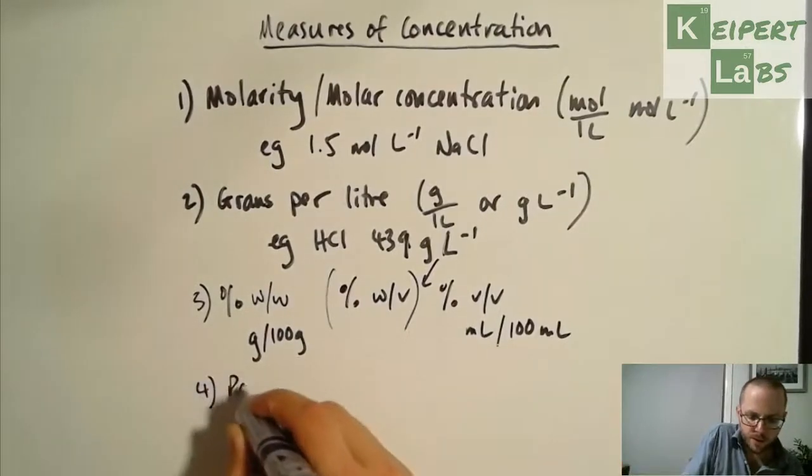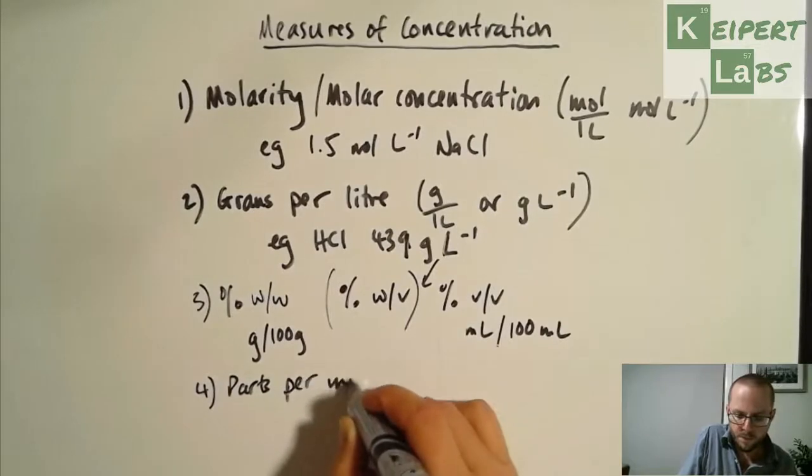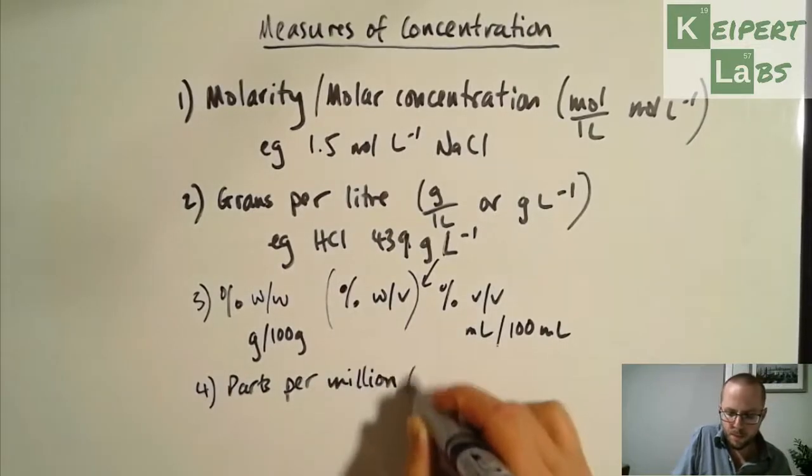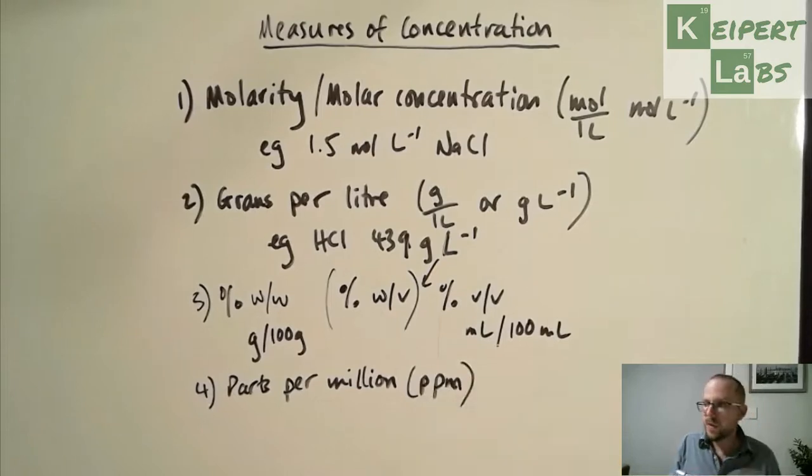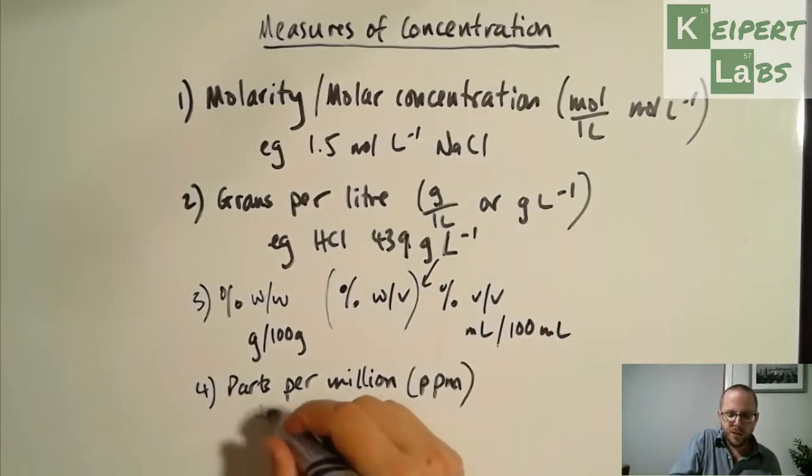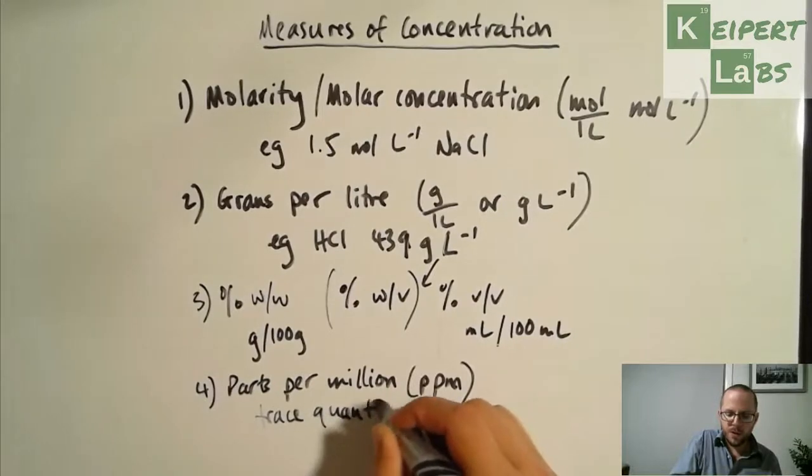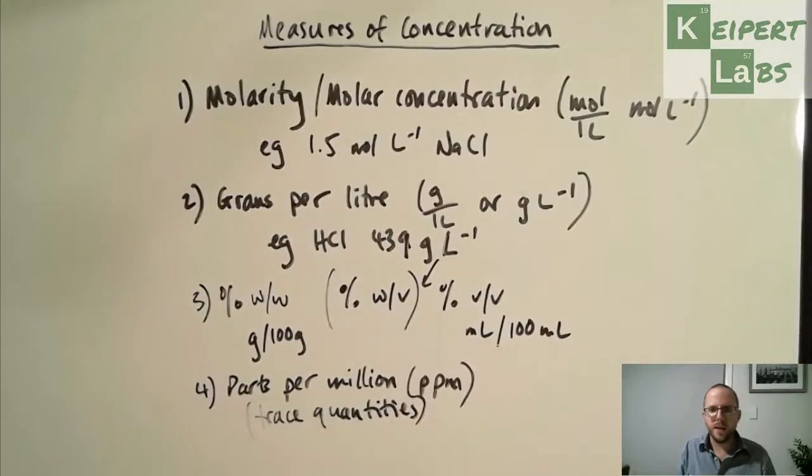But then, the last one here is what we call parts per million, or ppm. Now, this is a measure of concentration where we're talking about trace quantities. Really, really tiny amounts of something that if we were to measure it in any one of these other measures, the magnitude would be so small that it starts to get impractical. Too many zeros, or too many powers of 10 to the minus 3, and beyond. And so parts per million. We can also go down to parts per billion, and parts per trillion, at really trace quantities of things.